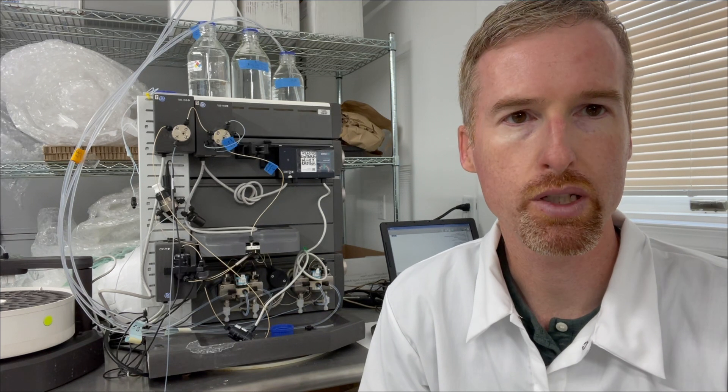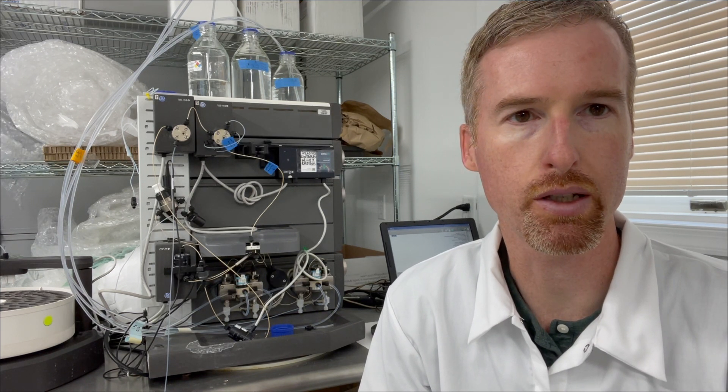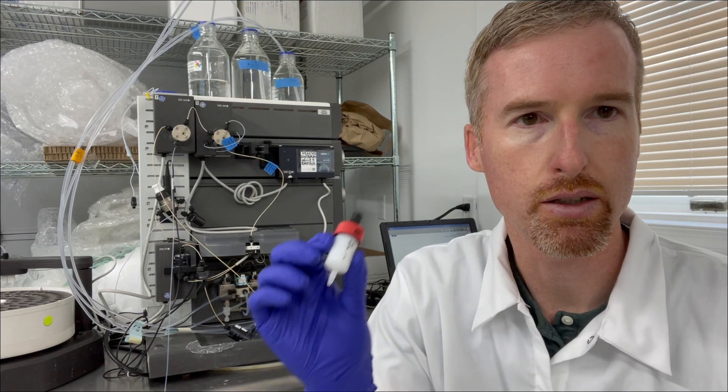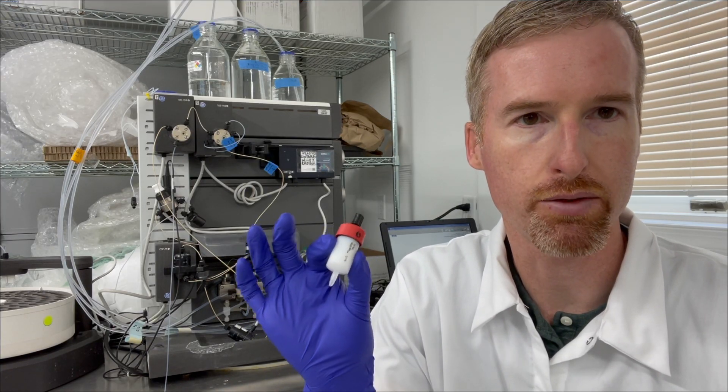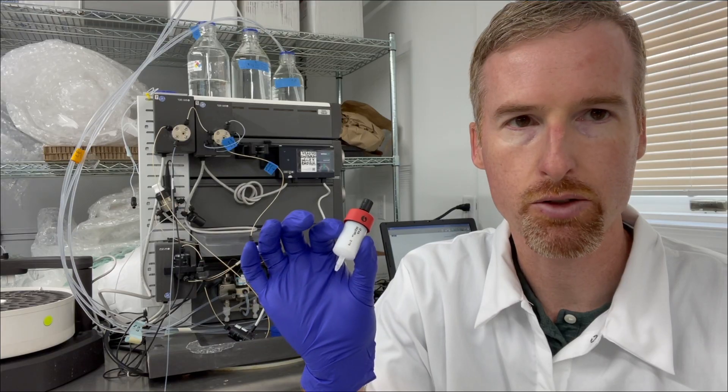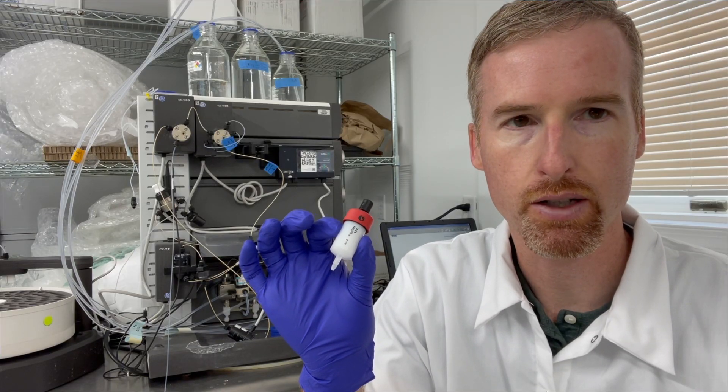Okay, so there's one more thing we need to do with the FPLC before we can load the protein onto the column, and that is equilibrate the column with buffer A. This is a HiTrap Q FF column.